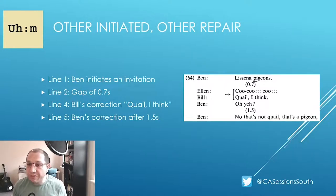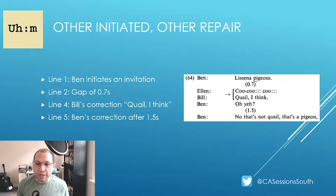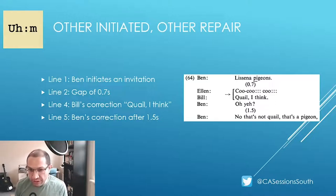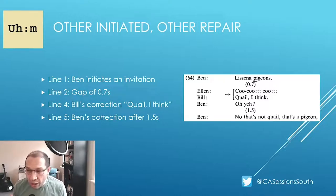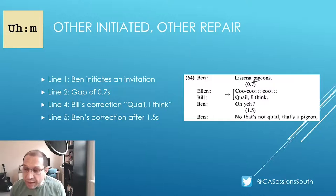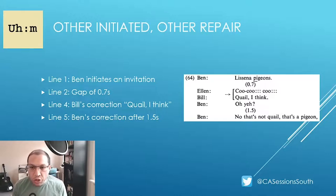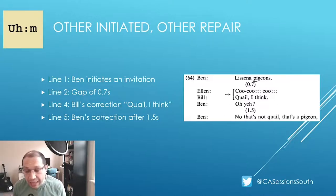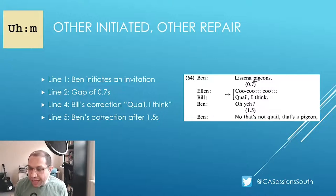Then we have an example of an other-initiated other repair sequence, otherwise known as a correction. Ben invites Ellen to listen to pigeons. After a gap of 0.7 seconds, Bill's turn flags the trouble source of Ben's invitation while offering a repair solution. It's worth noting that in addition to the 0.7-second gap, Bill tags on a downgrade that mitigates the repair initiation — 'Quail, I think.' The prosodic features include an upward intonation on 'quail' and a downward intonation on 'think,' making the initiation hearable as somewhat mitigated.